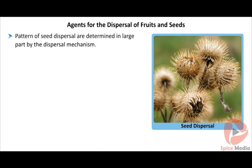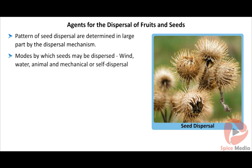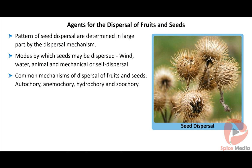Seed dispersal also ensures the successful spreading and establishment of a species on earth. The pattern of seed dispersal is determined largely by the dispersal mechanism. There are a number of ways by which seeds may be dispersed, including wind, water, animal, and mechanical or self-dispersal. The various types of dispersal mechanisms are autochory, anemochory, hydrochory, and zoochory.